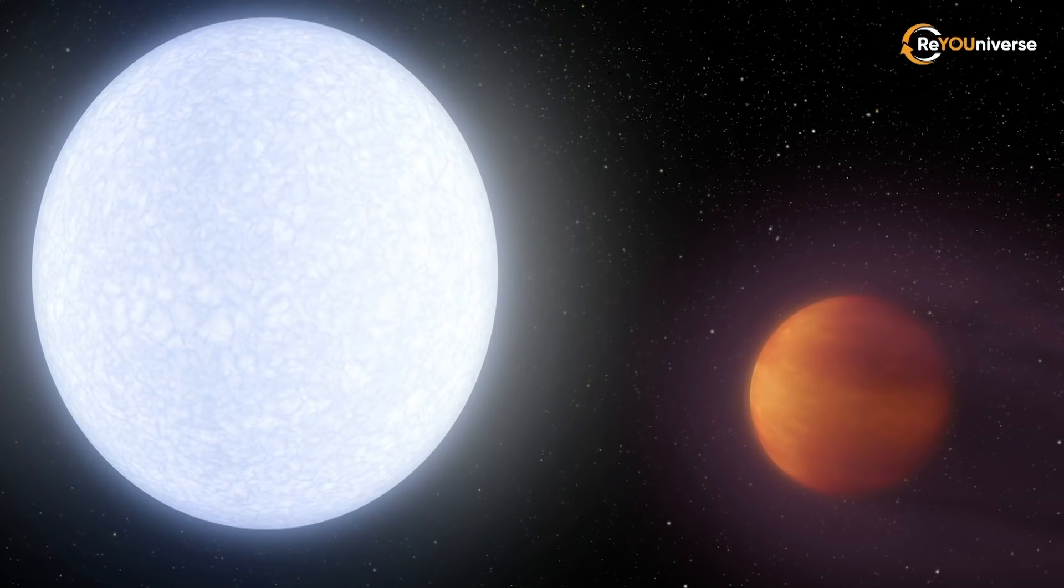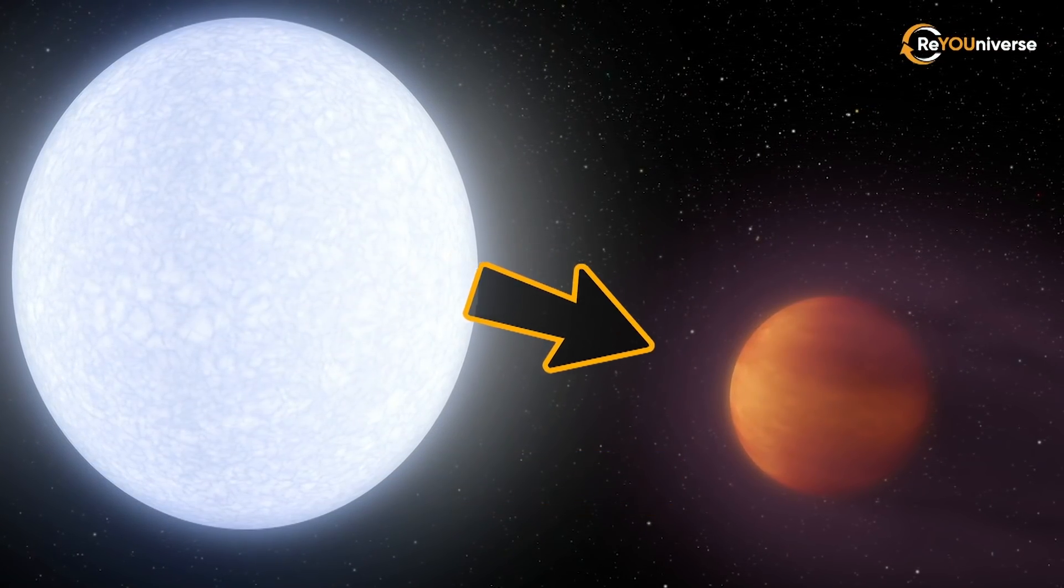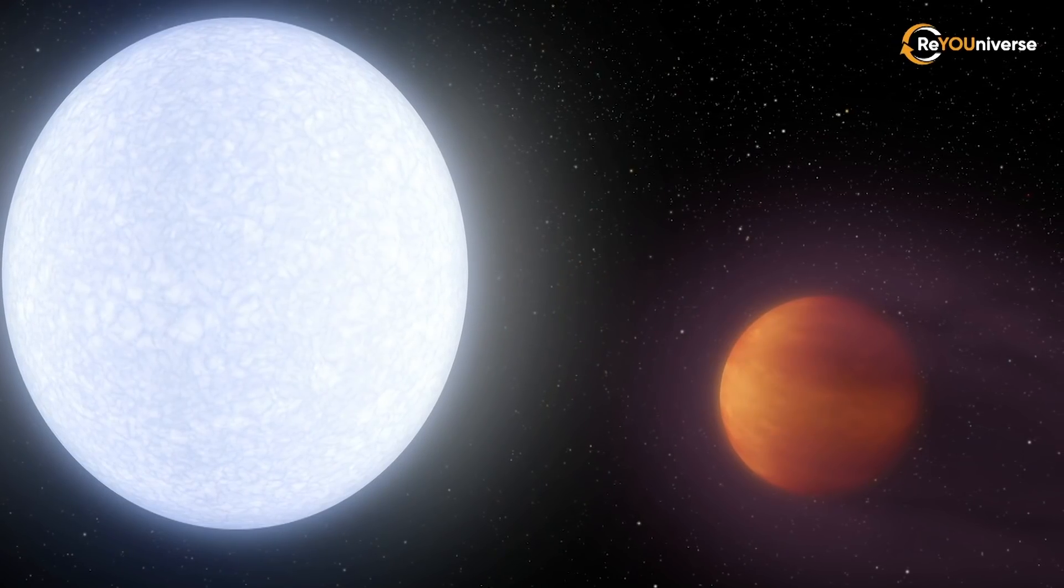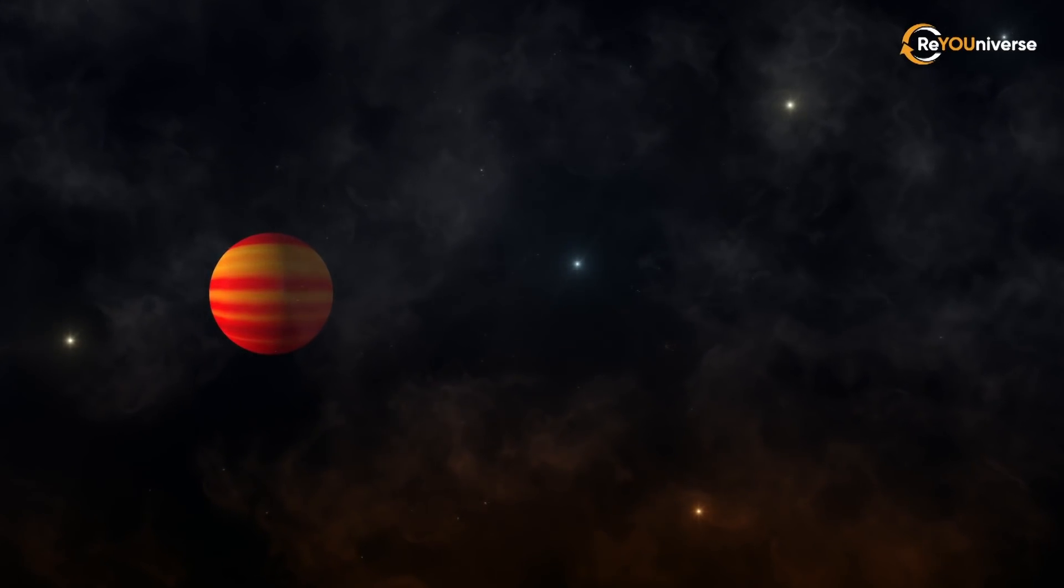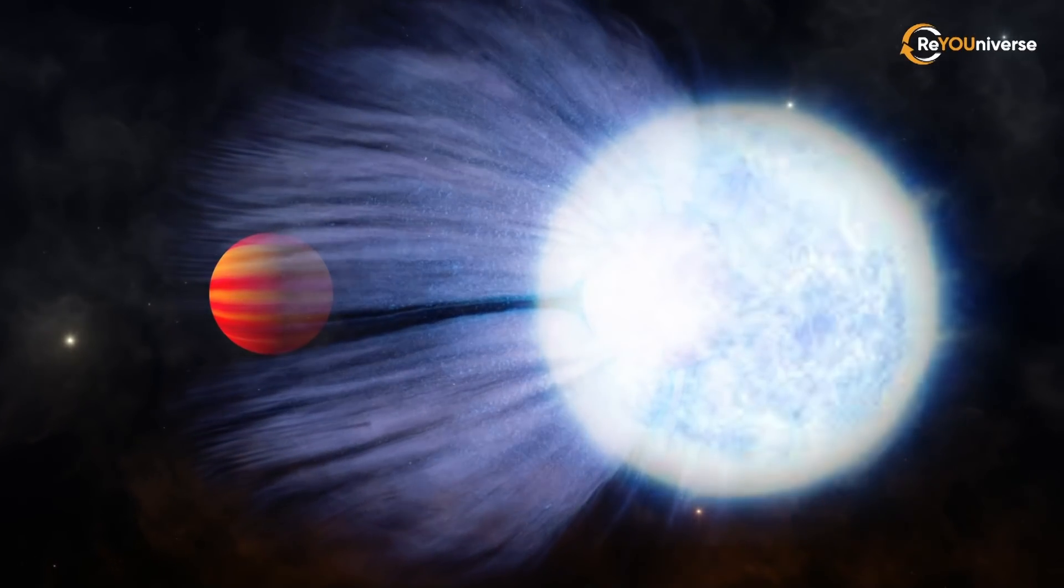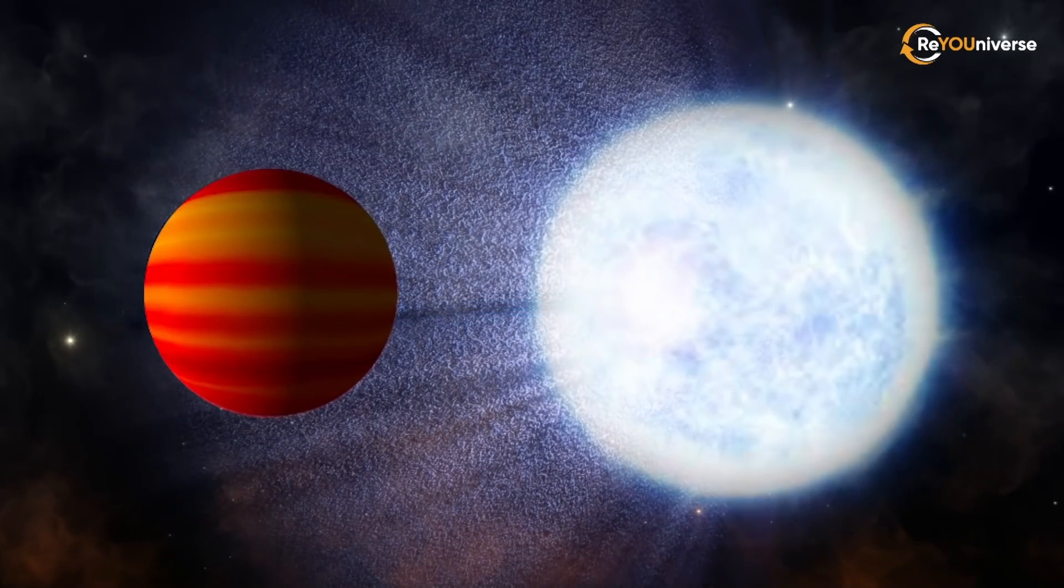Interestingly, the planet receives 44,000 times more flux from its star than the Earth from the Sun. Scientists would expect the planet to have a smaller radius, but the extreme radiation from its host star has caused the planet's atmosphere to puff up like a balloon.